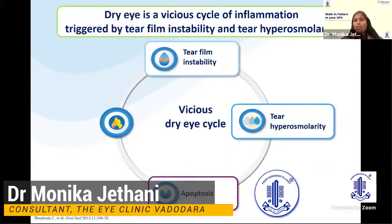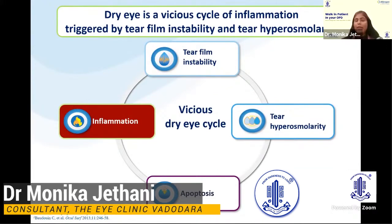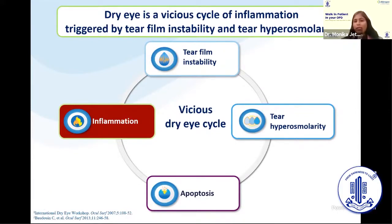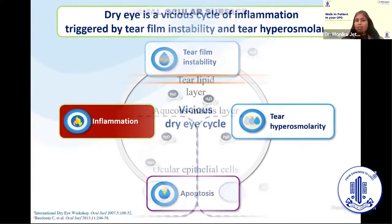We have understood that there is a vicious cycle — similar to the way a cycle wheel rotates. Because of all these processes — hyperosmolarity, apoptosis, and inflammation — a vicious dry eye cycle is initiated. So what we now need to do is figure out how to break this cycle.